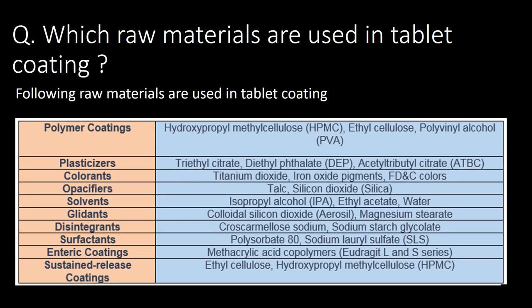Which raw materials are used in tablet coating? Commonly used raw materials for tablet coating include polymers, plasticizers, colorants, opacifiers, solvents, glidants, disintegrants, surfactants, enteric coating materials, and materials used in sustained release coating.